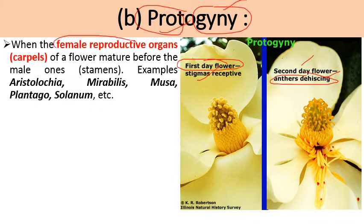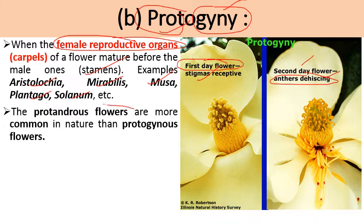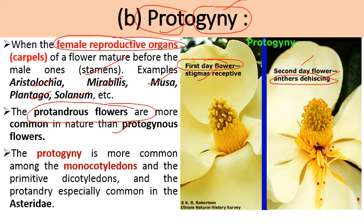When the carpels of a flower mature before the stamens, this condition is known as protogyny and the flowers are known as protogynous flowers. Examples include Aristolochia, Mirabilis, Musa, and Plantago. Protogynous flowers are more common in nature, especially in monocotyledons and primitive dicotyledons. Protandry, where the male parts mature earlier, is especially common in the Asteridae.